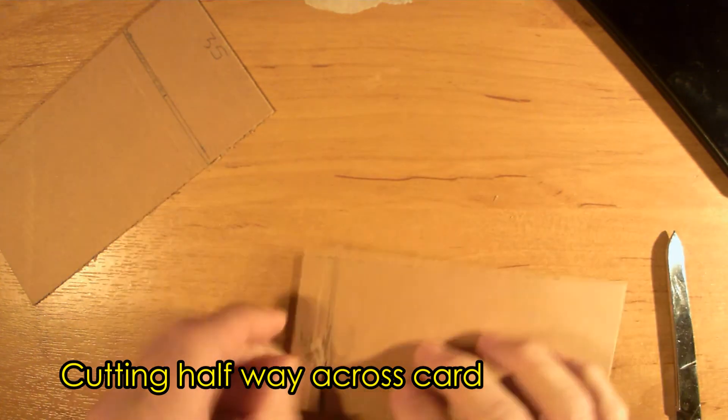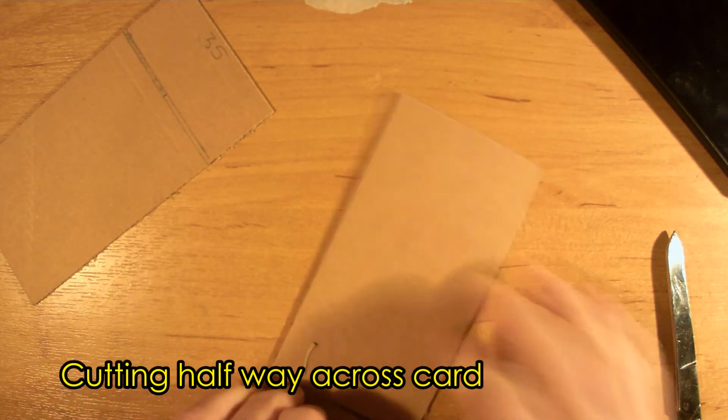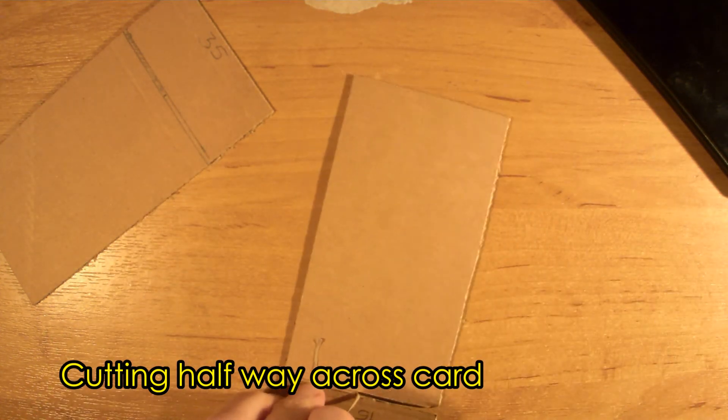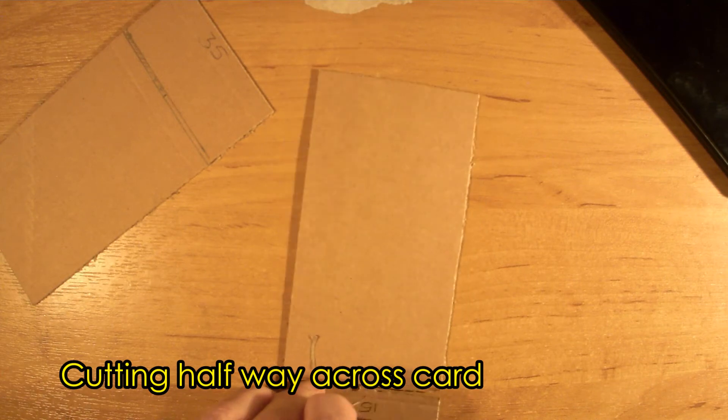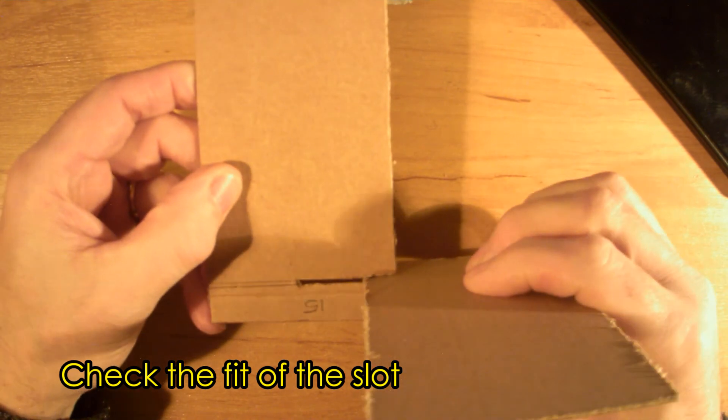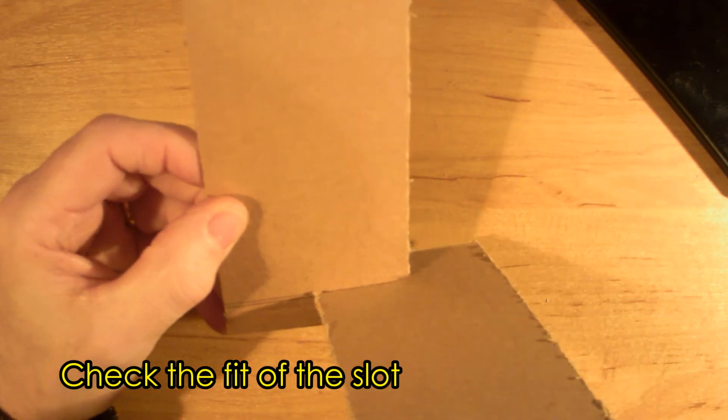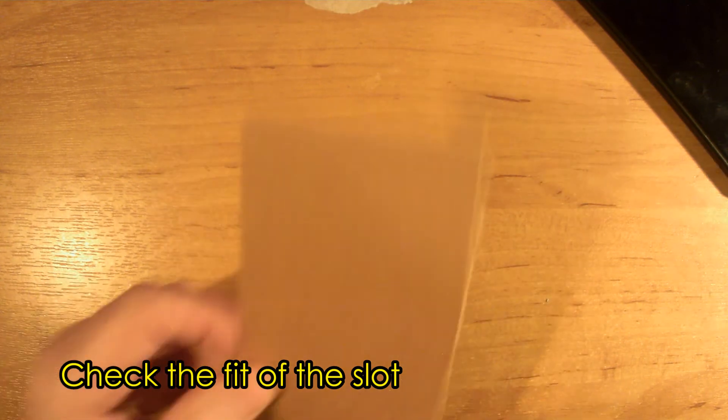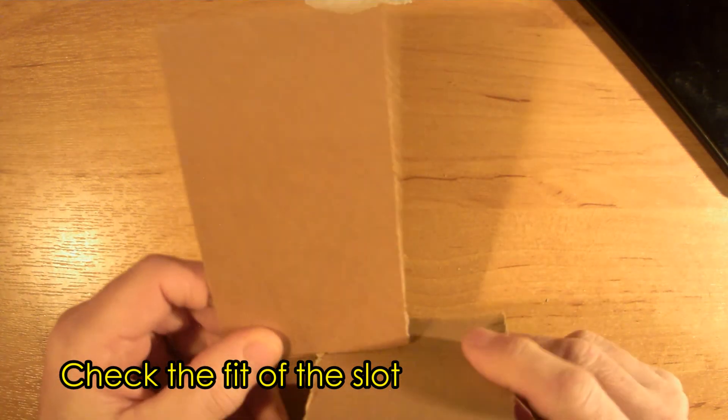I end up with a curly bit of card. So if I pull that up, I can get my scissors and just slip that off. And what you want to do is check that it just slides in. Tight, but not so tight that it doesn't go in, not so loose so it wobbles. And then I've got this one to do.